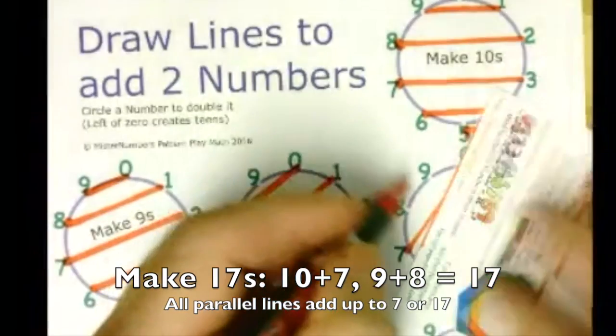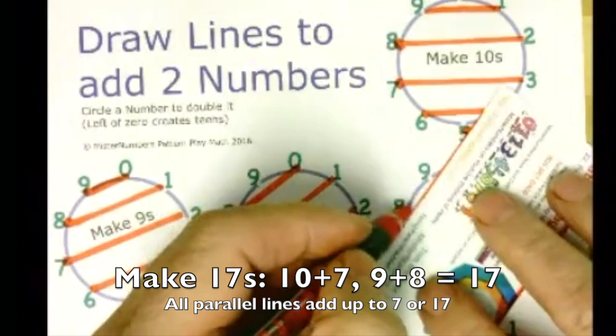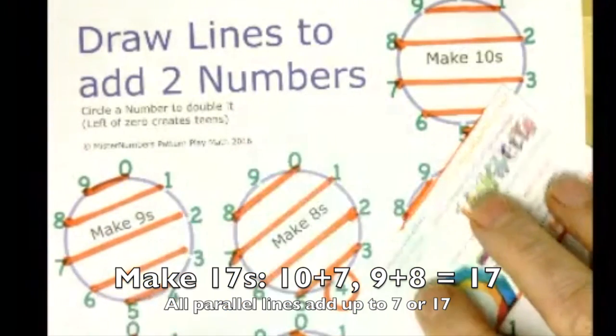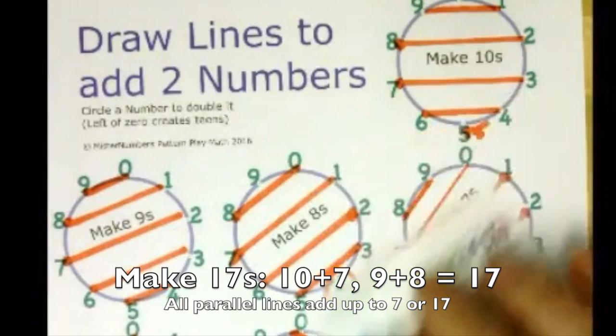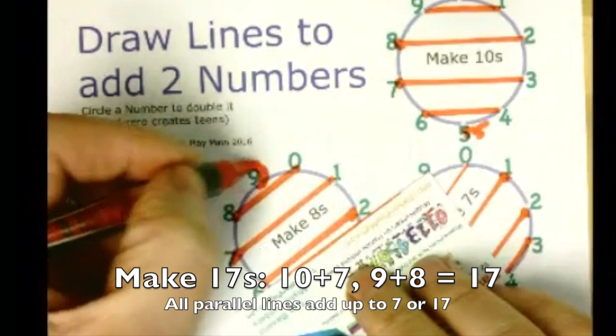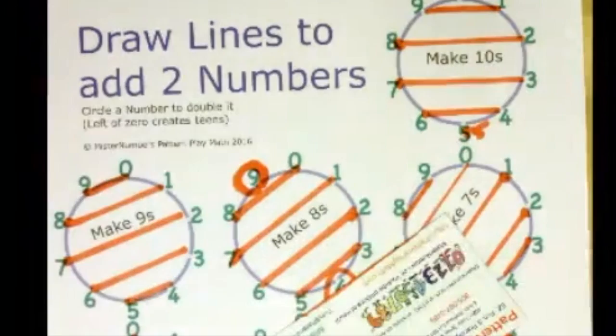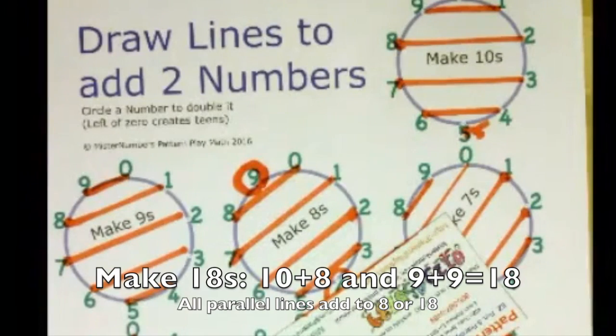And then make 7s or make 17s. 8 and 9 is sitting there all by itself. 17. And 8s, well, we've got our 9 up here all by itself. 9 times 2 or 2 9s. 9 plus 9 is 18. So that does it.